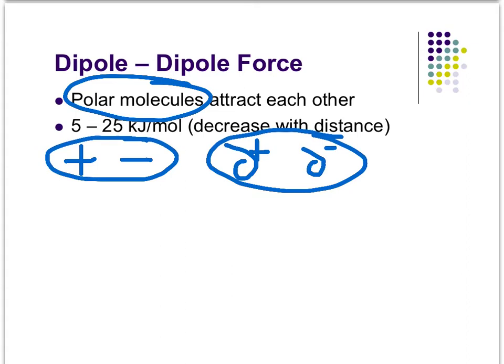What kind of energies are we talking about? We're talking about single-digit kilojoules per mole, or maybe low double digits kilojoules per mole. Compared to the hundreds or even thousands of kilojoules per mole of actual bonds, these dipole-dipole forces are pretty weak.